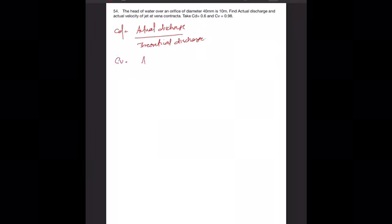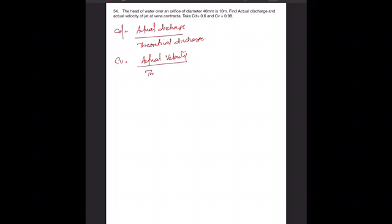Let us start. cd is equal to actual discharge by theoretical discharge, and cv is equal to actual velocity by theoretical velocity.